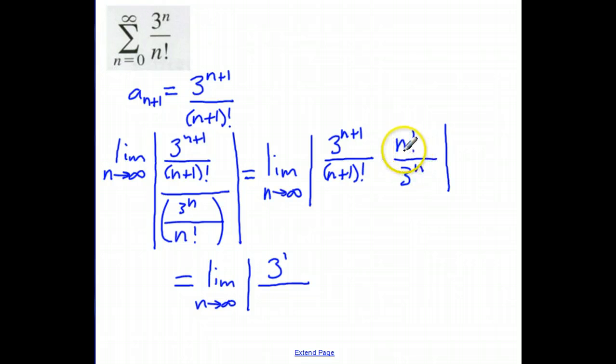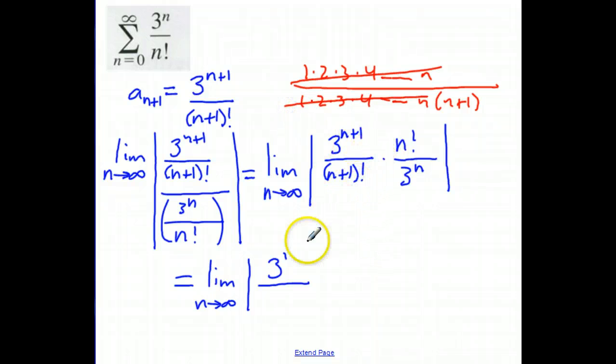What about these factorials? Well, n factorial. Let's recall here that n plus 1 factorial is 1 times 2 times 3 times 4 all the way out to n times n plus 1. And if I'm dividing all of these by n factorial, that means 1 through n multiplied together is going to cancel, and all I have left is n plus 1.